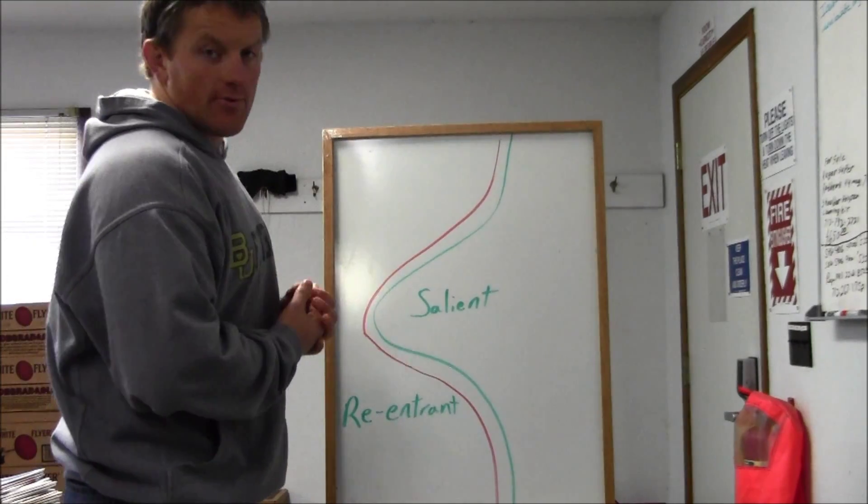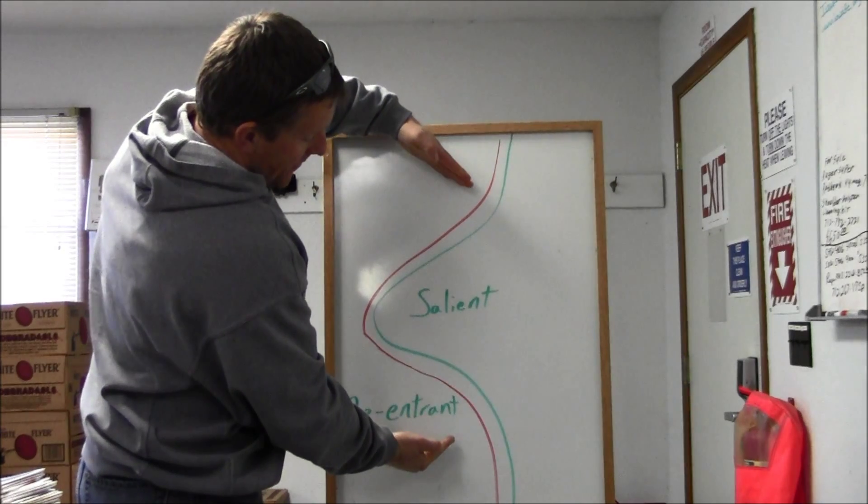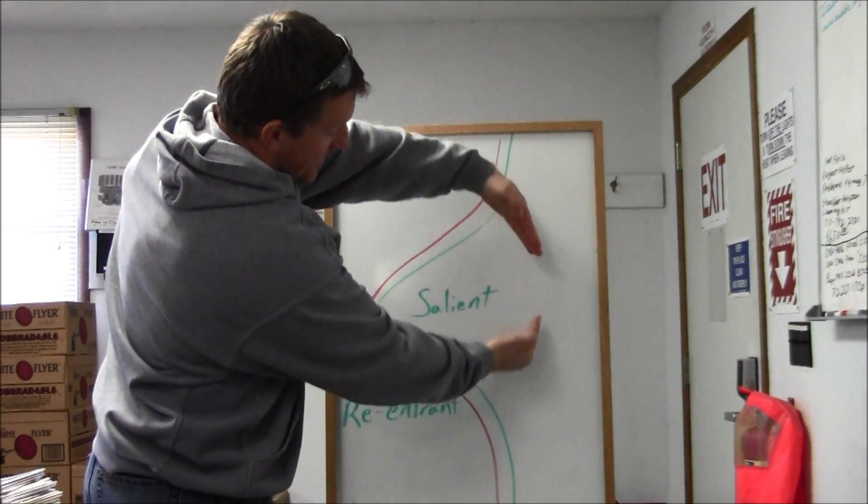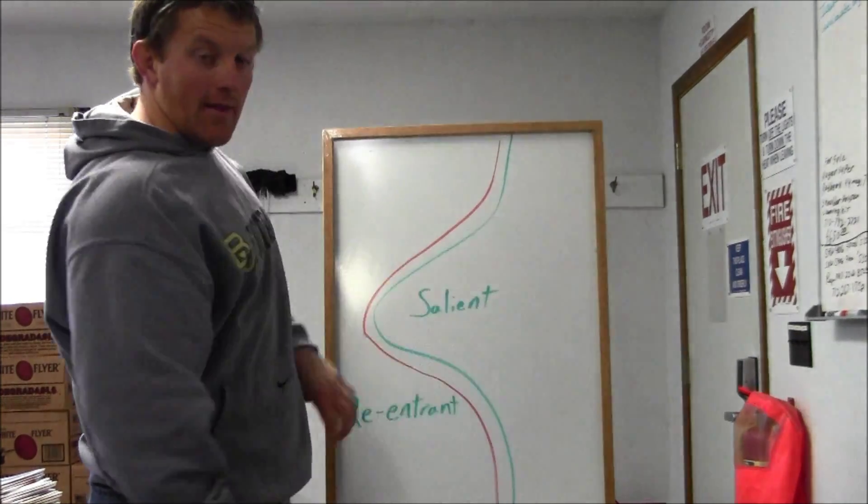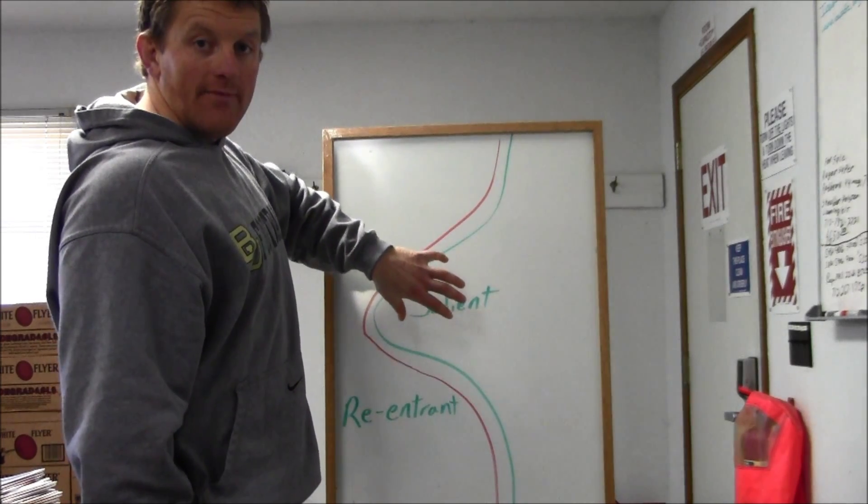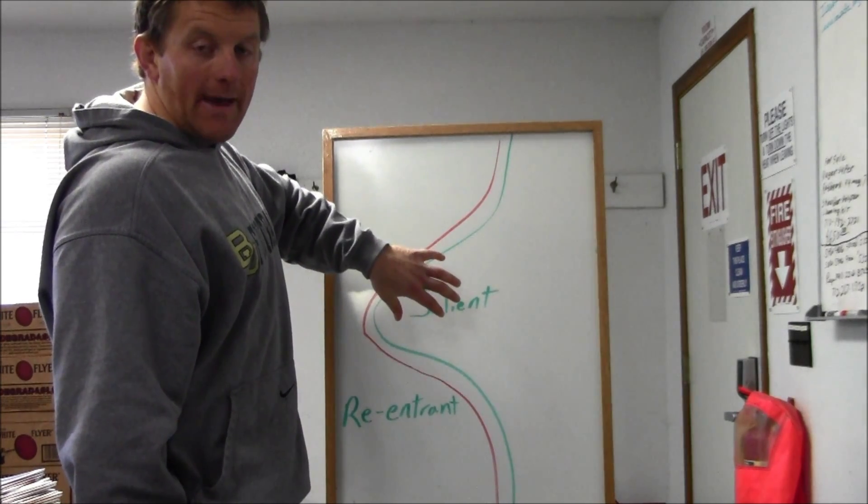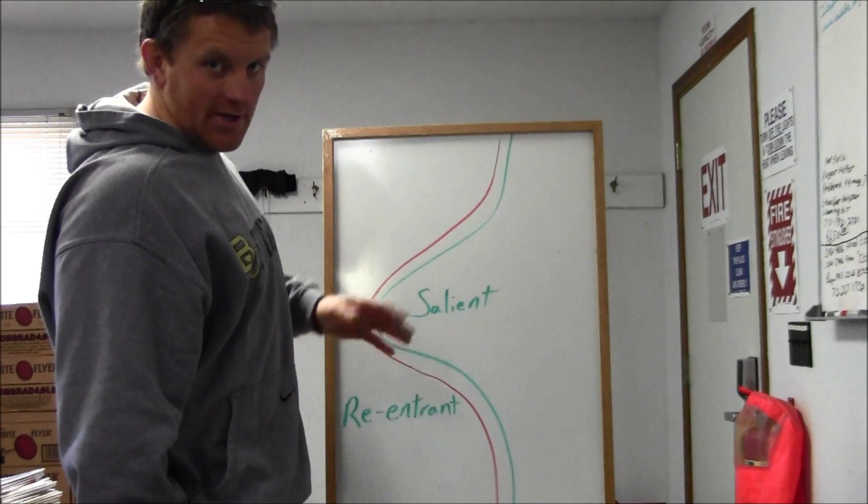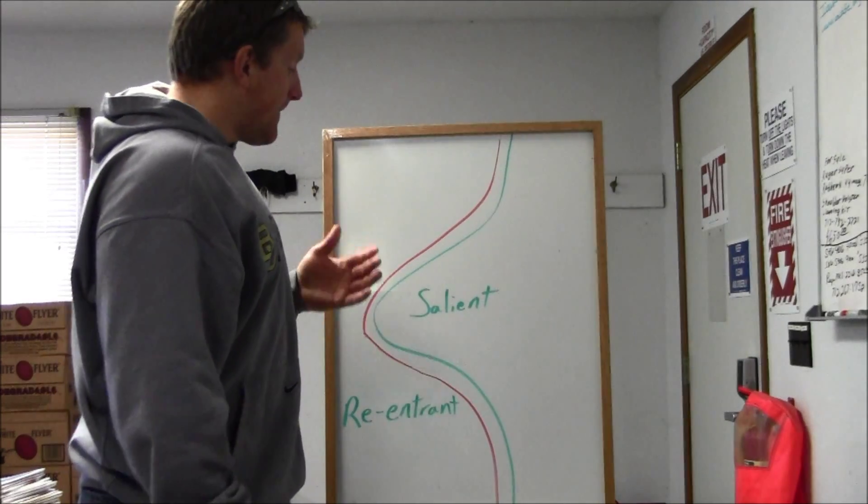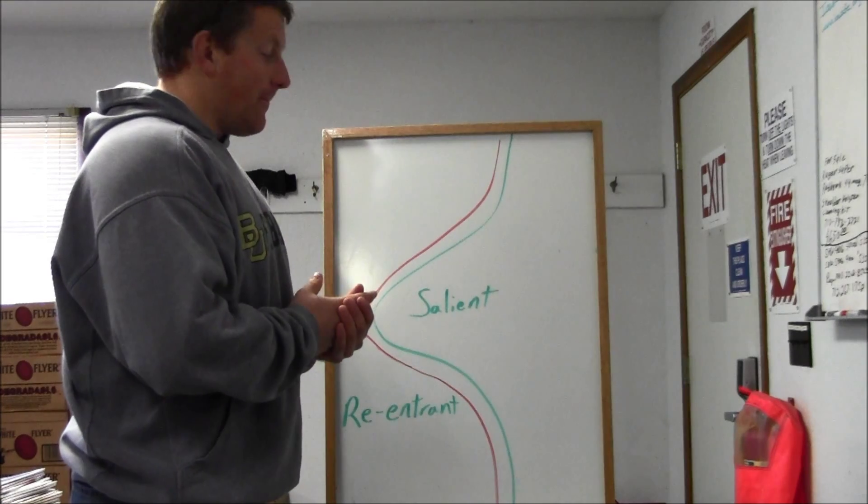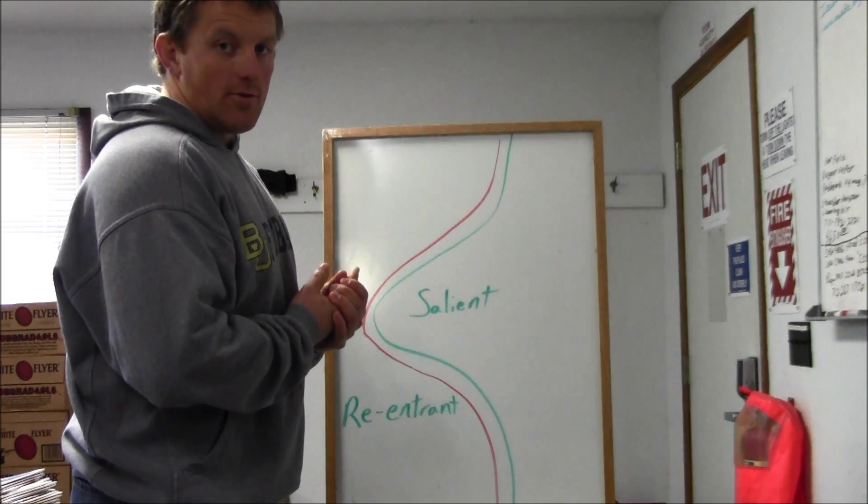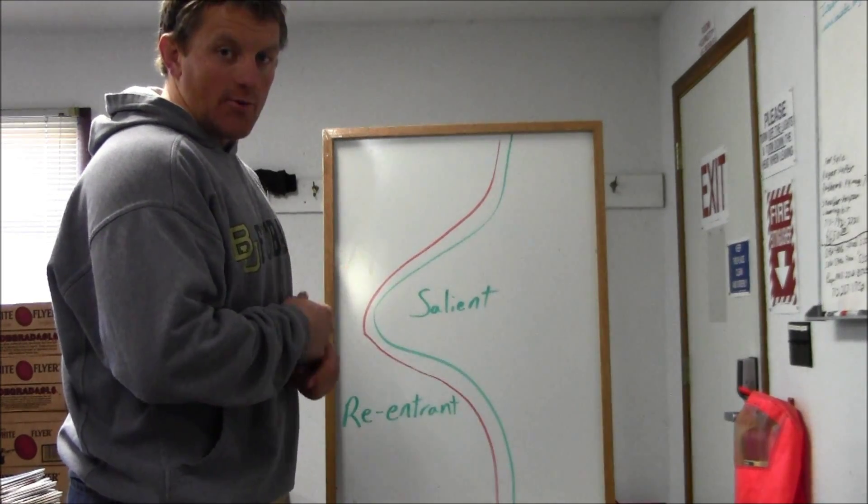The general gist of attacking the salient is to hit the salient from the two wings with two pincer movements, moving together, converging behind the line, sealing off the salient, and eventually destroying them either in a battle of annihilation or through a siege or some other method like that. Now, in and of itself seems very simple, but attacking the salient has numerous risks associated.